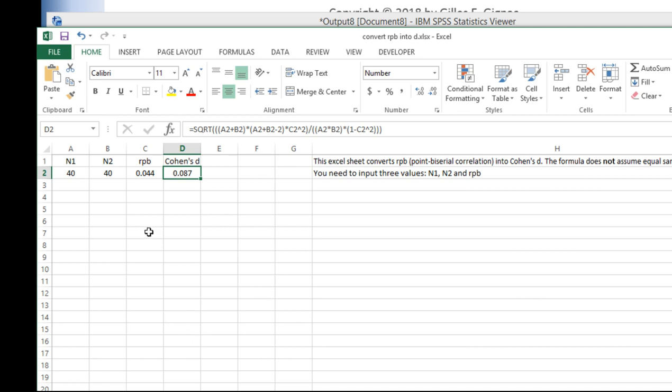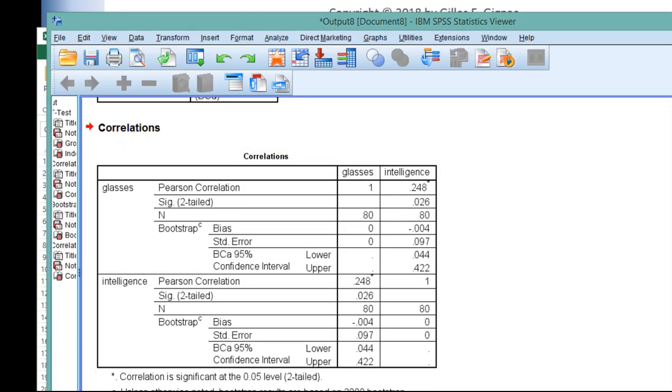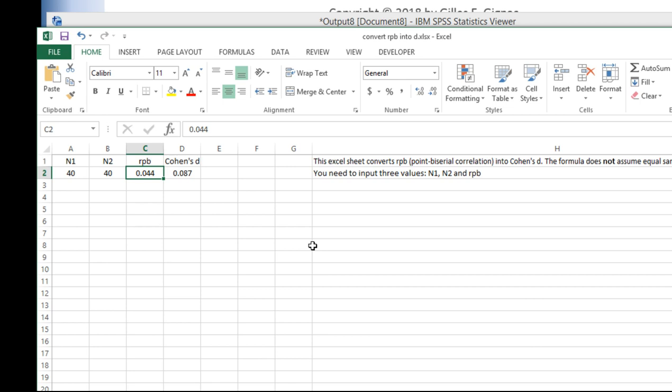Let me just write that down. Now I've got the same sample size and I've got to put the correlation in, the upper bound, 0.422. And I get 0.919. So now I've got both the lower bound and the upper bound Cohen's d.